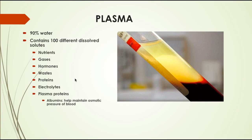Plasma, the liquid portion of the blood, is approximately 90% water. It has many dissolved solutes: nutrients, gases, hormones, waste products, proteins, and electrolytes. Plasma proteins help maintain osmotic pressure. Osmosis is the natural tendency of water to move from high to low concentration, and without plasma proteins, water would follow its concentration gradient and move out of your vessels. Plasma proteins help keep the right amount of water in your blood.